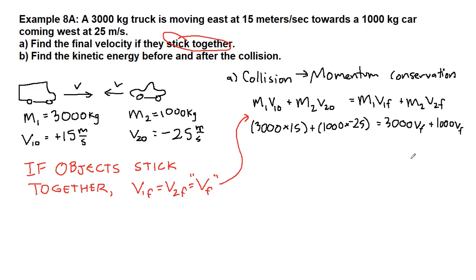All right so we can simplify this. On the left we have 20,000 and on the right we have 3,000 plus 1,000 of the same thing, so 4,000.